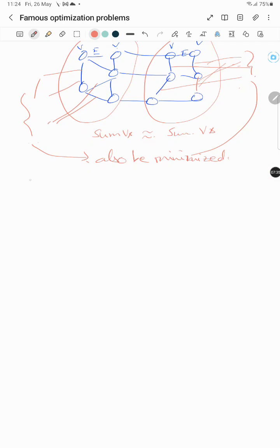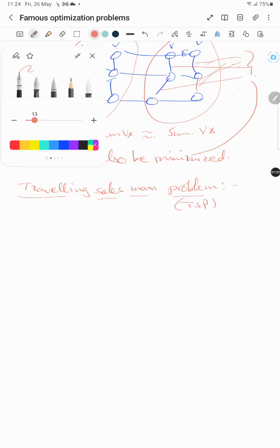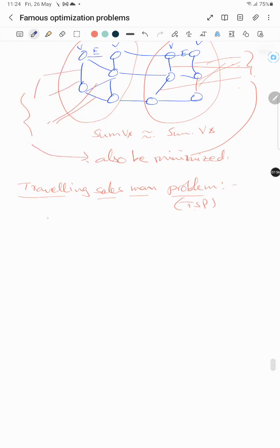And the next problem is famous traveling salesman problem, also called as TSP. TSP states that given a set of cities.